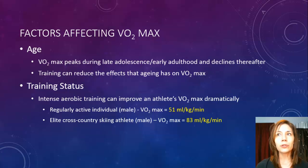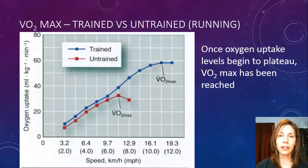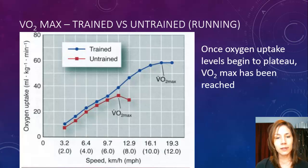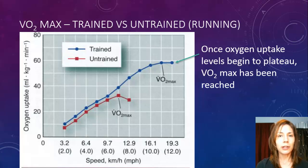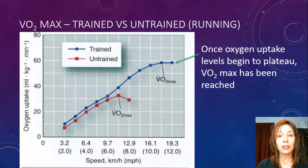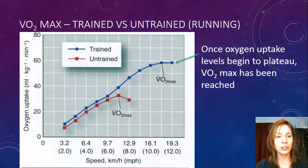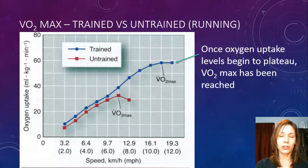Records have shown that the highest VO2max ever recorded was 94 mL/kg/min, which is pretty impressive. Looking at the graph on screen of trained versus untrained athletes in running, to know when VO2max has been reached you look for a plateau — a levelling off. When the graph stops rising, that's when VO2max has been reached, because no more oxygen is being taken up.